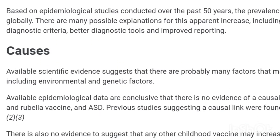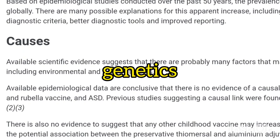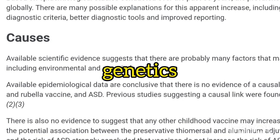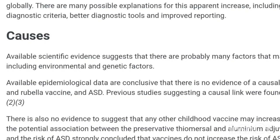The causes of ASD are probably genetic. Available epidemiological data are conclusive that there is no evidence of a causal association between the measles, mumps, and rubella vaccine and ASD. To summarize, ASD is an umbrella term that characterizes a person having social problems or failure to socialize with others effectively.